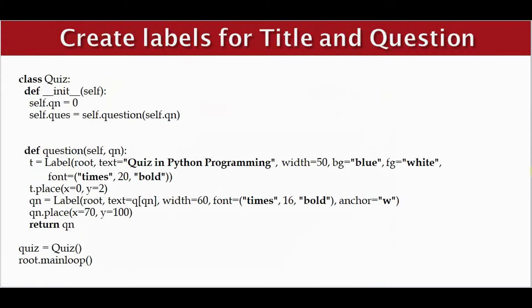The third step is we are going to create labels for displaying the title and the question. We are creating a class called quiz. In the __init__ constructor, the question number is initialized to 0. A function is defined which will return a label to display the question number. This function creates two labels: one for displaying the title and another for displaying the question — initially q[0]. The labels are placed at the corresponding x and y coordinates and an instance of the class quiz is created, which calls the constructor.